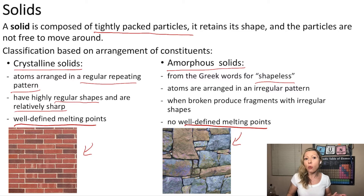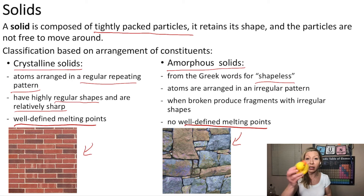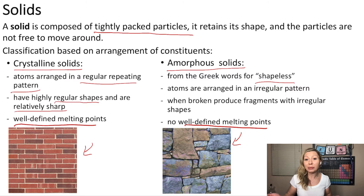So what is an example of an amorphous solid? Glass, for example, is an amorphous solid. My little ducky here is made of an amorphous solid. An example of a crystalline solid? Well, let's say diamonds or just simple table salt.